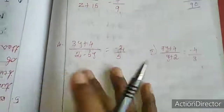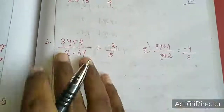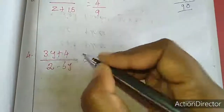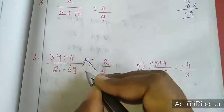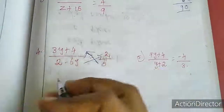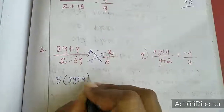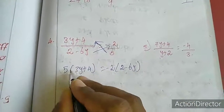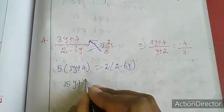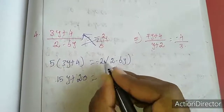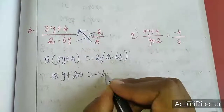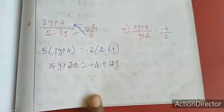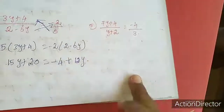This third sum you have to do similarly. Now I will work out the 4th sum — the 4th and 5th are the same model, so I will do the 4th and you have to do the 5th. We have to multiply 5 into this equation and minus 2 by cross multiplication. So 5 into 3y plus 4 equal to minus 2 into 2 minus 6y. Expanding: 15y plus 20 equal to minus 4 plus 12y. After this, minimize and find out the value of y. You have to do the 5th sum in the same way.